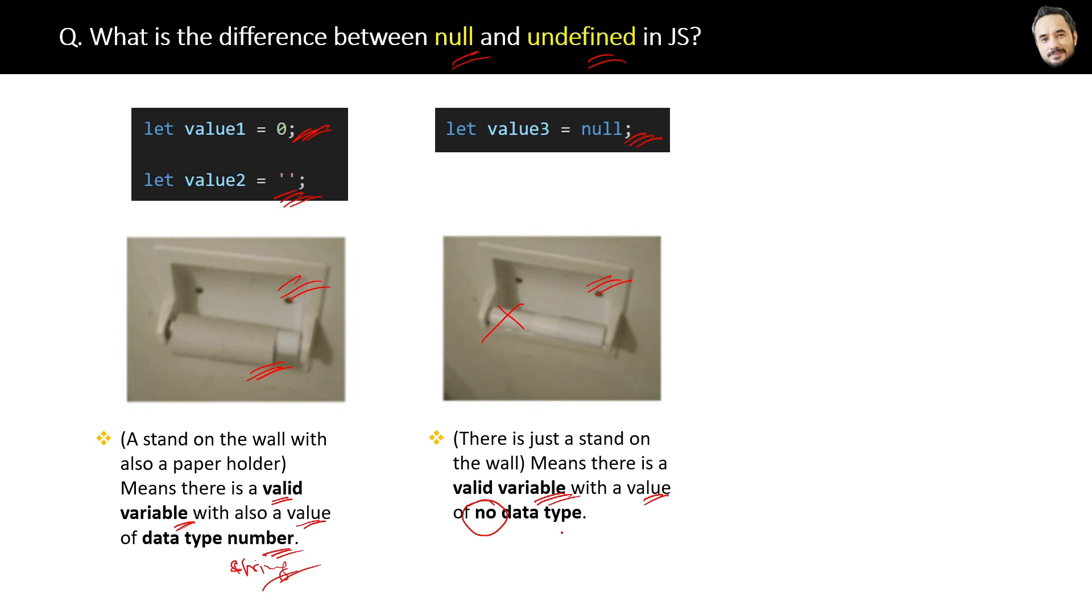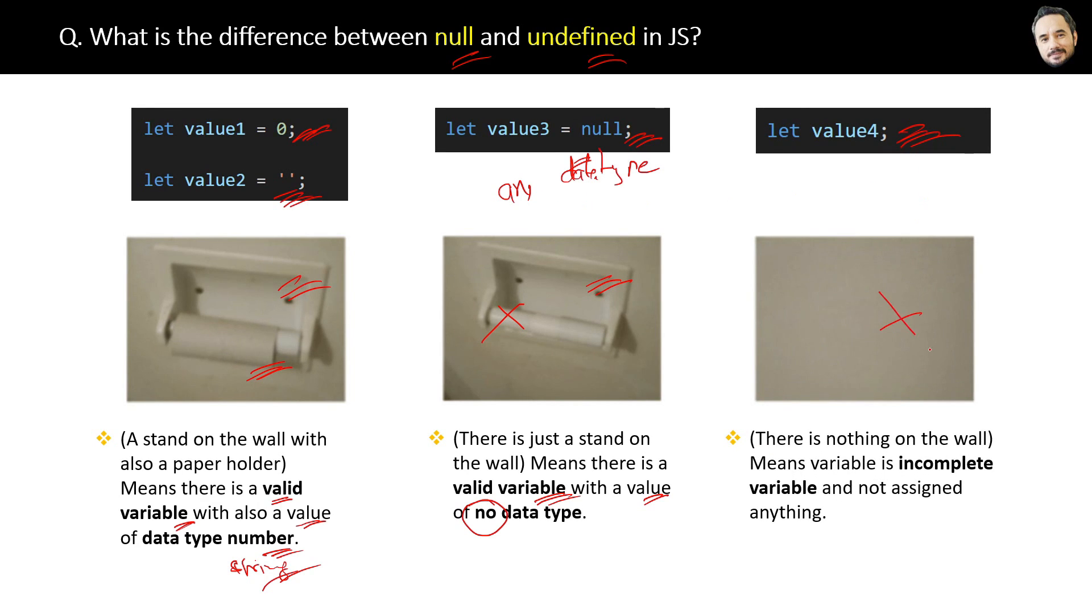In future, you can assign any number, string or any data type value to it. And if the variable is undefined, that means there is nothing on the wall. This means it is an incomplete variable, which is not assigned.